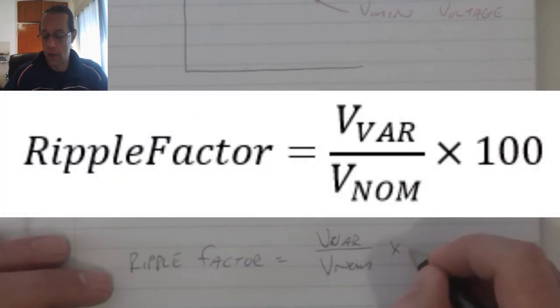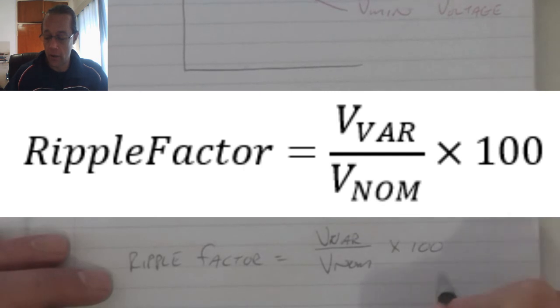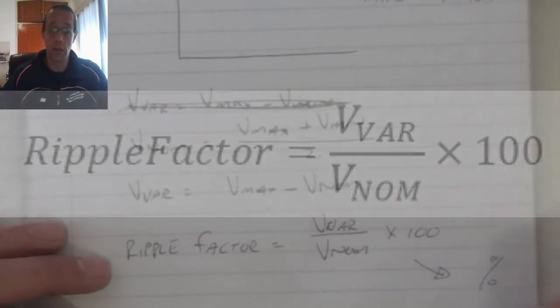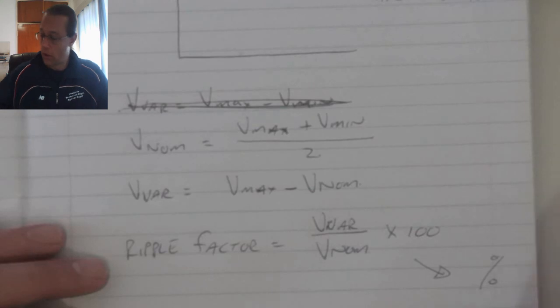Now we multiply this by 100 so that our answer for this is represented as a percentage.